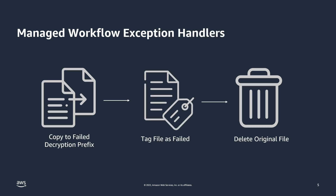If any errors occur during a workflow's execution, the exception handling steps you specify are executed. Several things can trigger these steps, such as if the file decryption process fails, if the timeout threshold for a step is reached, or if a step fails due to reasons such as inadequate S3 permissions on a copy step. Regardless of the reason, the exception handling steps will copy the failed file to an S3 prefix named failed decryption, tag it with the status of failed decryption, and then delete the originally uploaded file.